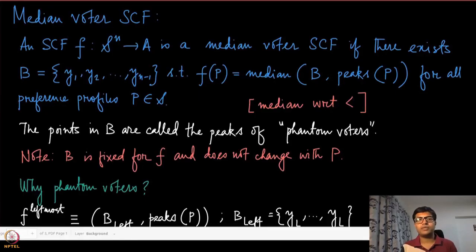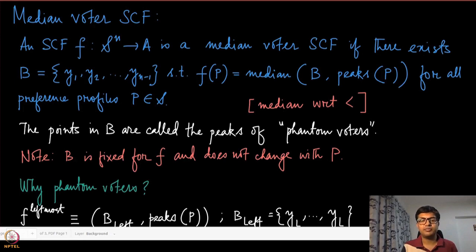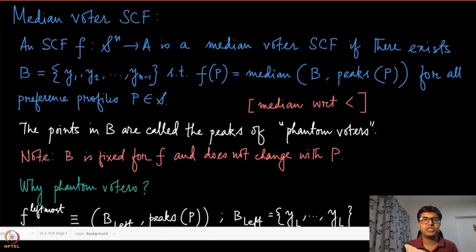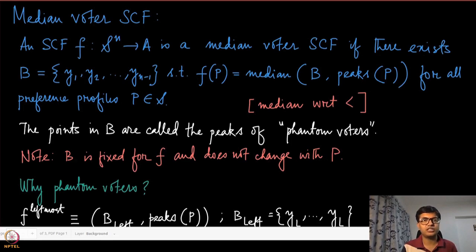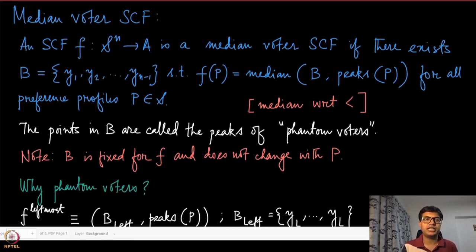We have seen that we can bypass the Gibbard-Satterthwaite result in the special domain called the single-peak domain. We discussed one example: pick the leftmost peak, the rightmost peak, or the median peak, which is a mechanism that is onto and strategy-proof but not dictatorial. In this module we are going to look at that specific mechanism in further detail and show that this class of mechanisms is indeed strategy-proof.